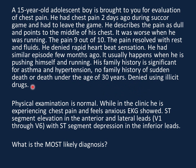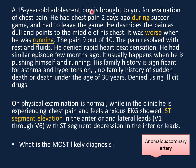He denied rapid heartbeat sensation and had a similar episode a few months ago that usually happens when pushing himself and running. Family history is significant for asthma and hypertension, with no family history of sudden death or death under age 30. He denied illicit drug use. The ECG showed ST segment elevation in the anterior and lateral leads V1 to V6 with ST depression in the inferior leads. The most likely diagnosis is anomalous coronary artery — an important cause of sudden death in adolescent athletes.